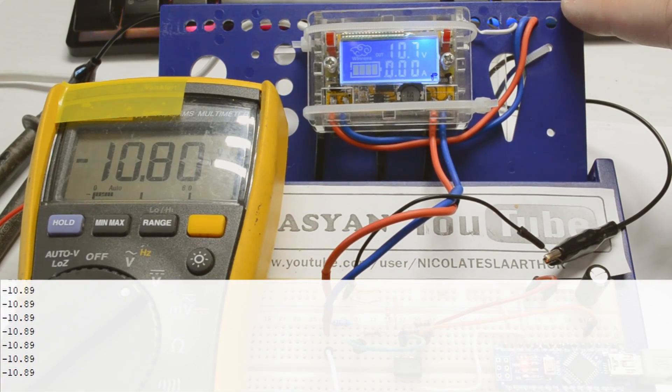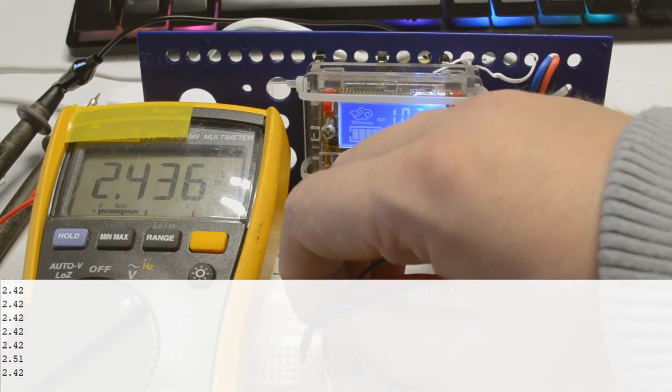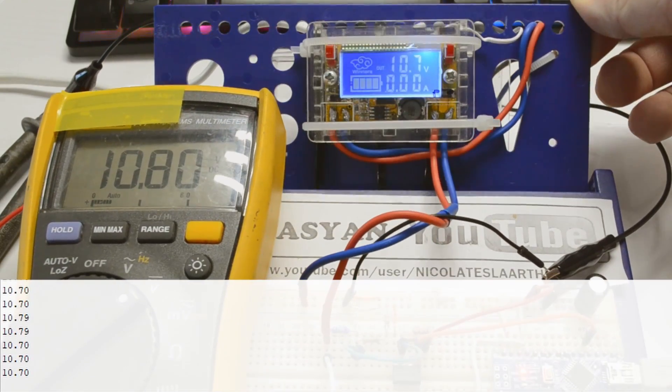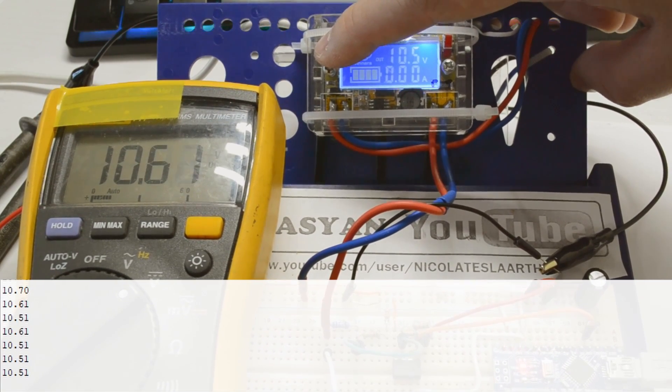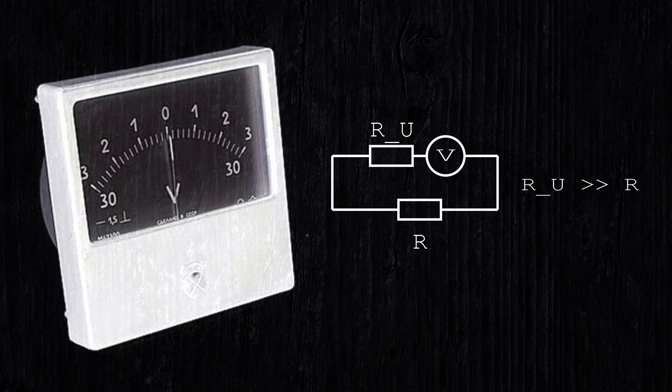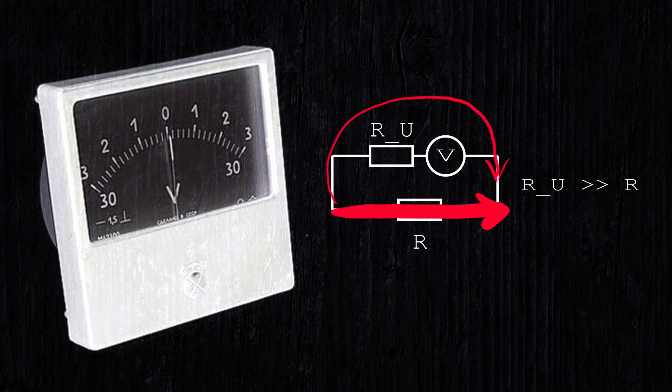An important point should be noted. An ideal voltage meter should have infinite resistance, because the greater the resistance of the device connected in parallel to the load, the less current through it, and therefore, the less effect on the circuit.